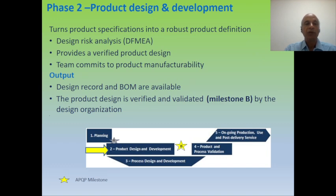In Phase two — Product Design and Development — outputs from Phase one are used as inputs. Important activities include DFMA and design risk analysis. This phase provides a verified and approved product design, and the team commits to product manufacturability, meaning the product design must be such that it can be easily manufactured. Outputs include a design record, bill of materials, and the product design is verified and validated by the design organization — the R&D and engineering team — which is another milestone for Phase two.